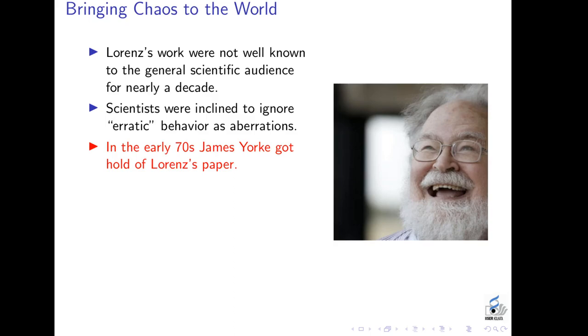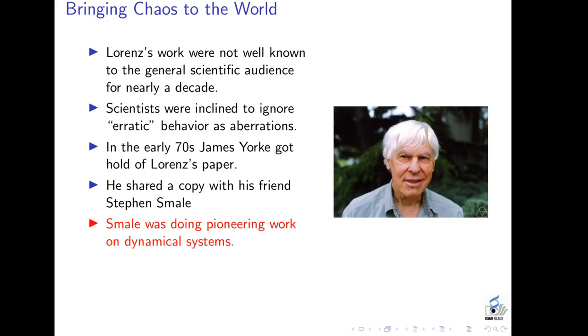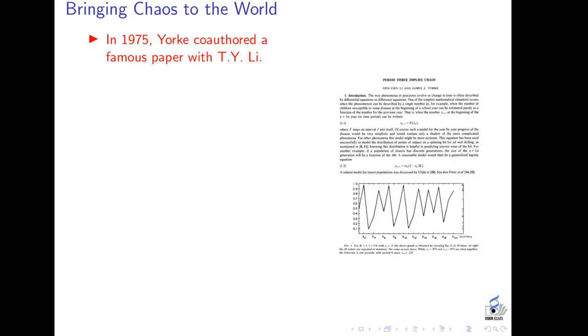In the early 70s, James Yorke got hold of Lorenz's paper. And what he did was share a copy with lots of his friends. In particular, he shared a copy with his friend, the mathematician, Stephen Smale. Smale, at the time, was doing pioneering work on dynamical systems. And many of his works actually exhibited the same kind of behavior that Lorenz's system was doing. And Yorke took it upon himself to try to communicate Lorenz's and Smale's ideas to a much bigger audience.